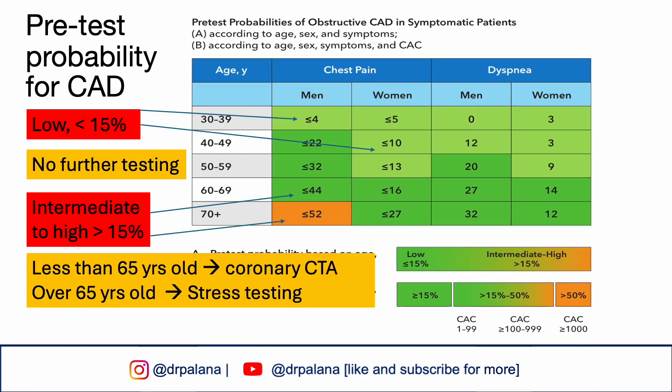In patients without known history of coronary artery disease who present with symptoms suggestive of stable angina, the approach to diagnostic testing is guided by the pretest probability of obstructive CAD. If the patient has a low pretest probability of CAD — less than 15% — then there is no further testing. If the patient has intermediate or high pretest probability of CAD, the next best option is either stress testing or a coronary CTA.